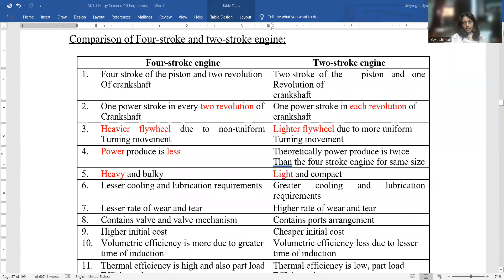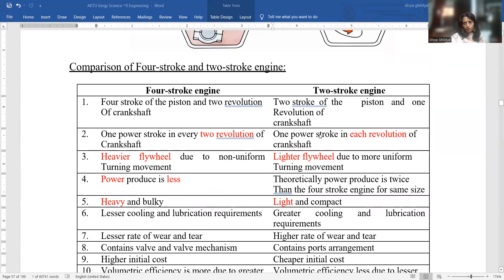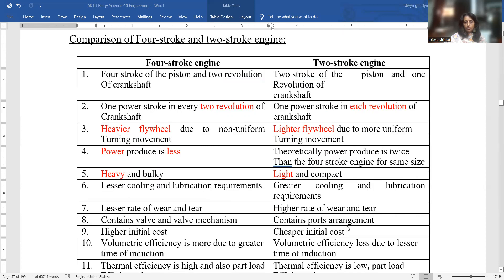This comparison chart has been asked in AKTU to compare the four-stroke and two-stroke heat engine. It is important. Four-stroke has four strokes of piston and two revolutions of crankshaft. Two-stroke has two strokes of piston and one revolution of crankshaft. One power stroke in every two revolutions versus one power stroke in each revolution. In four-stroke it's a heavier flywheel, in two-stroke it is lighter flywheel. In four-stroke power produced is less, in two-stroke power produced is twice. Four-stroke is very heavy and bulky, two-stroke is very light and compact. Four-stroke has lesser cooling and lubrication requirements. In two-stroke, greater cooling and lubrication are required.